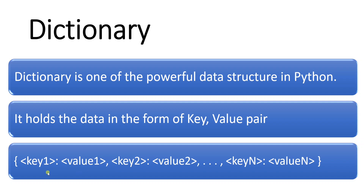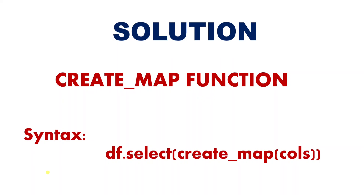Within the curly braces we can keep any number of key-value pairs — it's unbounded. Coming back to our original requirement, we have to convert DataFrame columns into a dictionary or map type. The simple solution is create_map. What is the syntax for this create_map function? It is also very simple. We can use either select or withColumn function, and within that we apply this function. The syntax is create_map, and within the brackets we provide the columns.